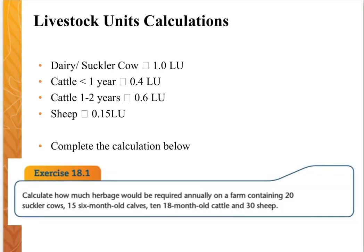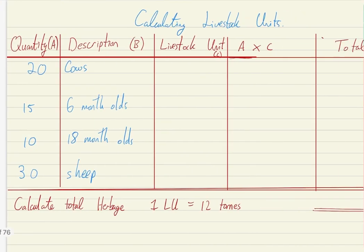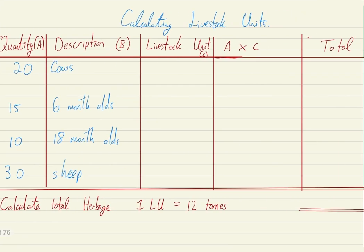Looking at an example: calculate how much herbage would be required annually on a farm containing 20 suckler cows, 15 six-month-old calves, 10 eighteen-month-old cattle, and 30 sheep. When calculating livestock units, I like to create a little table to help organize my data. Column A is my quantity: 20 cows, 15 six-month-olds, 10 eighteen-month-olds, and 30 sheep.